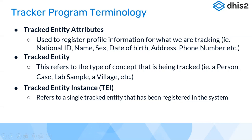Any questions up to this point? We really need to get these concepts clear so that you can do wonders with DHIS2 tracker. Any questions about tracked entity type, tracked entity attributes, or tracked entity instances? Let's move forward.